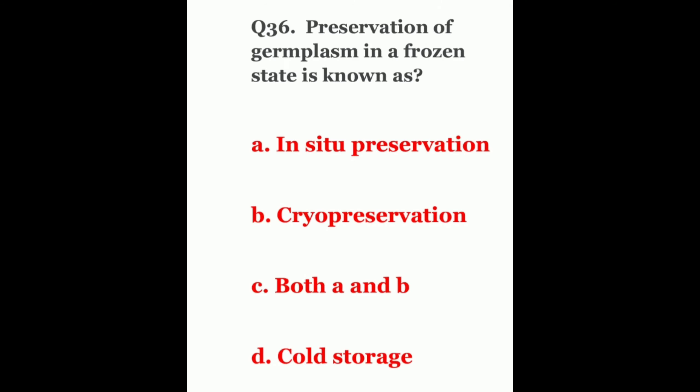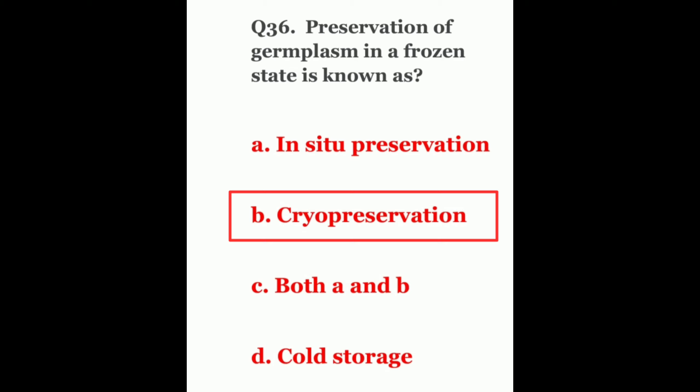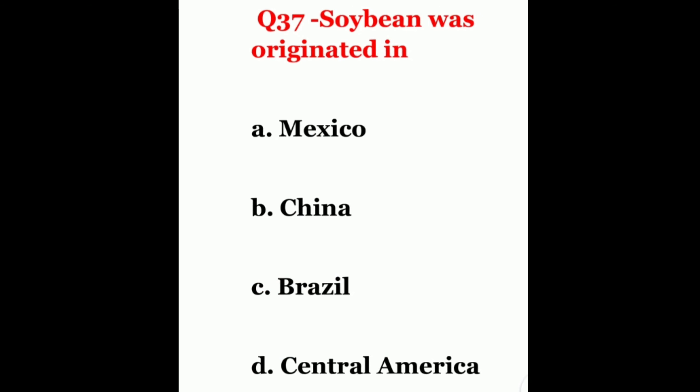Question 36. Preservation of germplasm in a frozen state is known as? The options are in-situ preservation, cryopreservation, both A and B, or cold storage. The correct answer is cryopreservation.